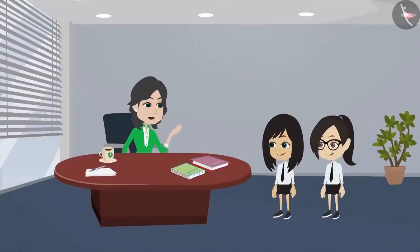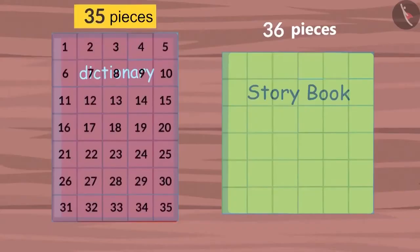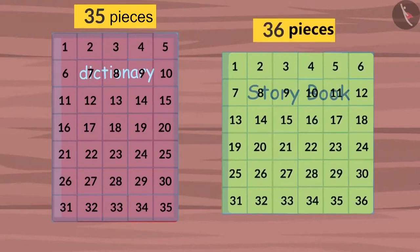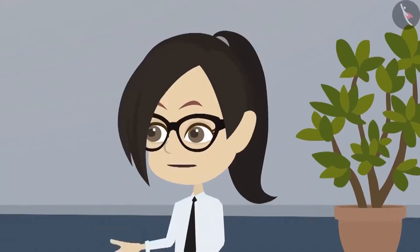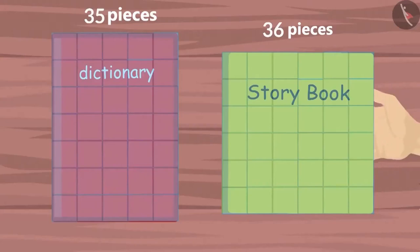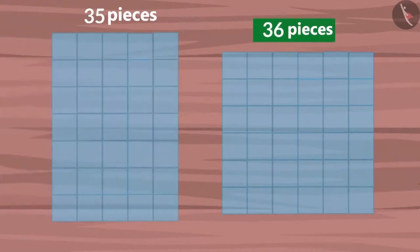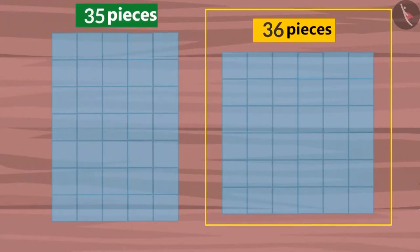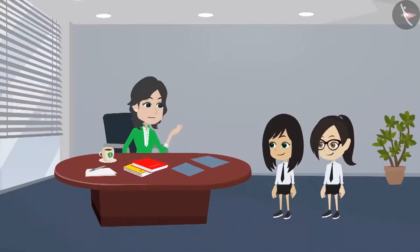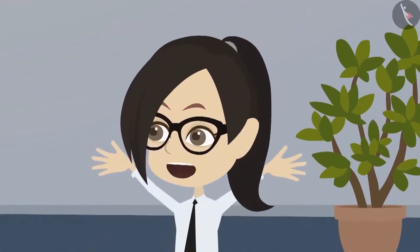Whose book required more pieces to cover? 35 pieces were used to cover my book, whereas 36 pieces were required to cover Neha's book. That means more pieces were required to cover Neha's book. Does this mean Neha's book is bigger? Yes, because Neha's book occupies as much space as 36 pieces and my book occupies as much space as 35 pieces — so Neha's book is bigger.